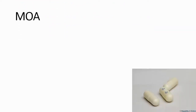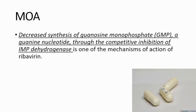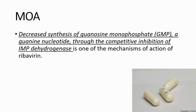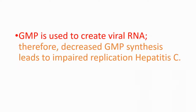Let's talk about the mechanism of action. This drug decreases the synthesis of GMP by competitively inhibiting an enzyme called IMP dehydrogenase. By decreasing the levels of GMP, it impairs replication of hepatitis C, because GMP is used to create viral RNA. Therefore, decreased levels of GMP lead to impaired replication of hepatitis C.